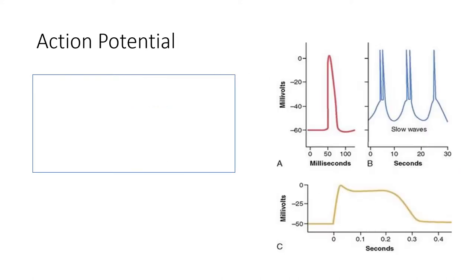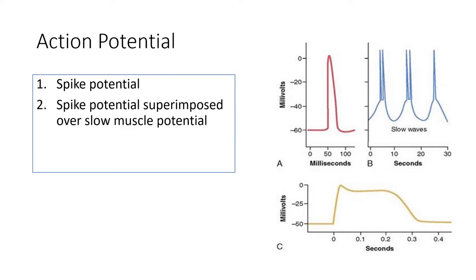When depolarization reaches a threshold potential, an action potential is generated and transmitted through gap junctions. The first type, shown in red, is a spike potential — similar to that seen in skeletal muscle and mostly seen in single-unit muscle fibers. The second type, shown in blue, is the superimposition of slow wave rhythms by spike potentials, causing rhythmic contraction of smooth muscles. Whenever the potential rises above minus 35 millivolts, an action potential is generated followed by muscle contraction.